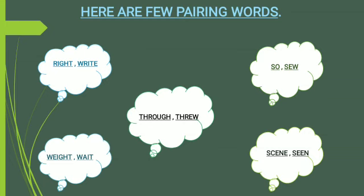See the next cloud. Scene — S-C-E-N-E — means a view, nazara. And its homonym, seen — S-E-E-N — means to have seen something. You might have seen this word in your notebooks — sometimes your teacher checks your notebook and writes 'seen,' meaning your teacher has seen your work.